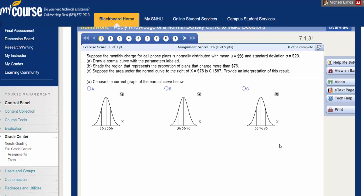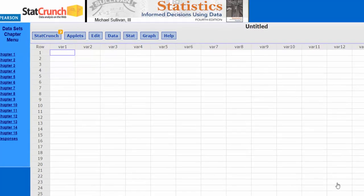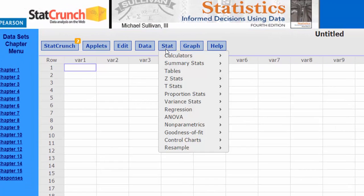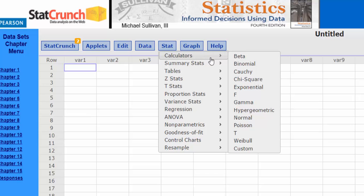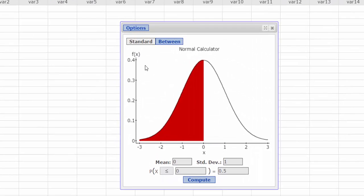I'd like to do that in StatCrunch. So first, let's open up StatCrunch. In StatCrunch, we're going to click Stat, highlight Calculators, and then highlight Normal. And there's my normal curve.